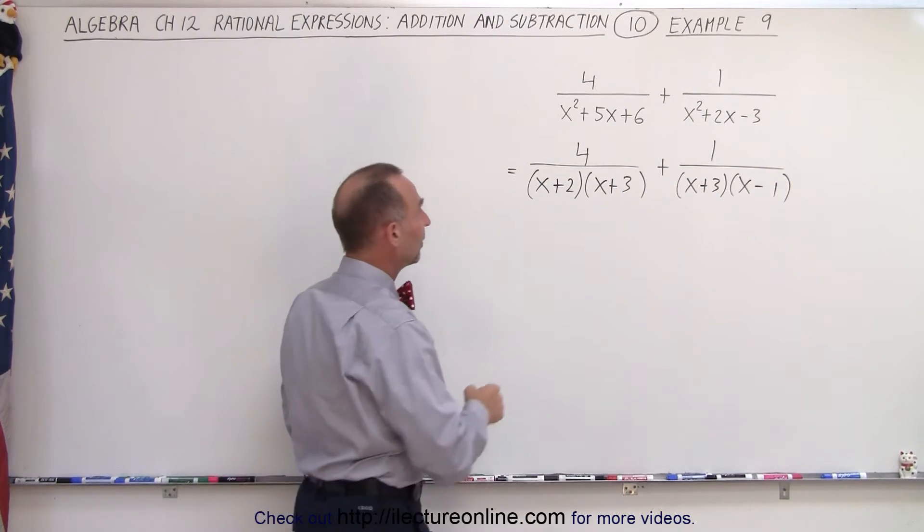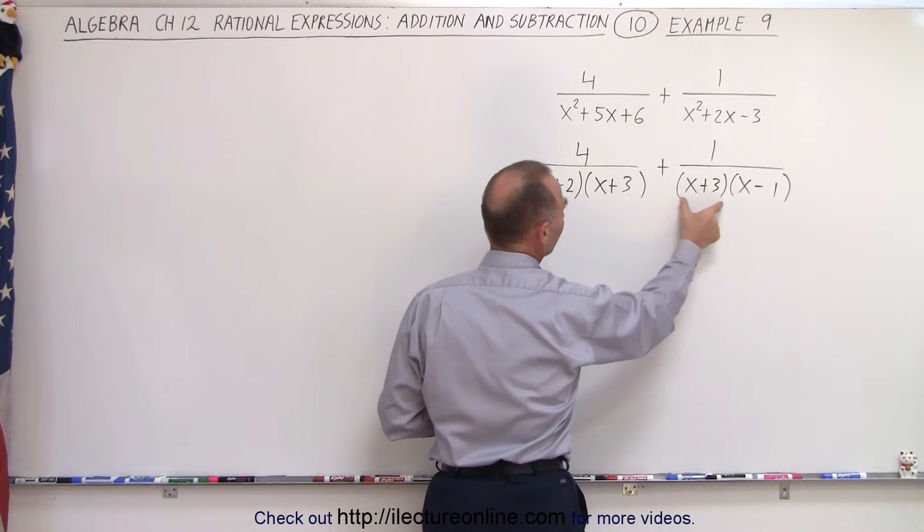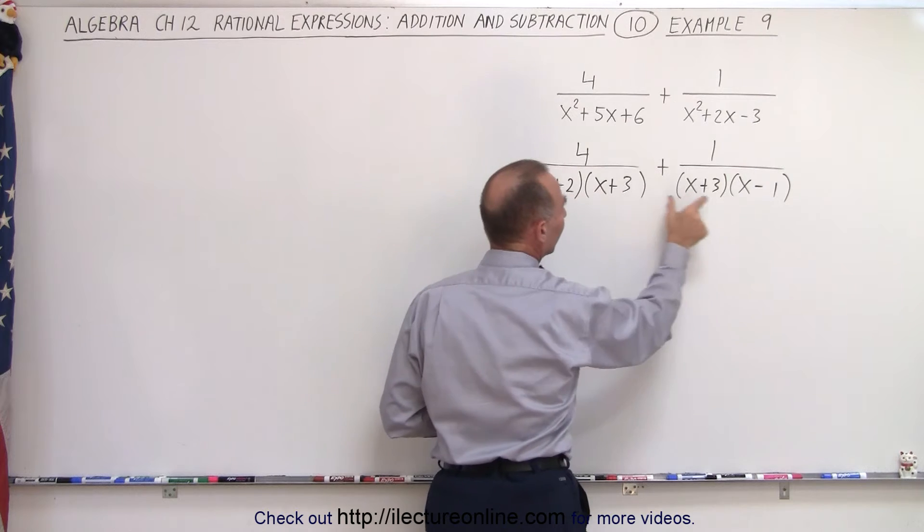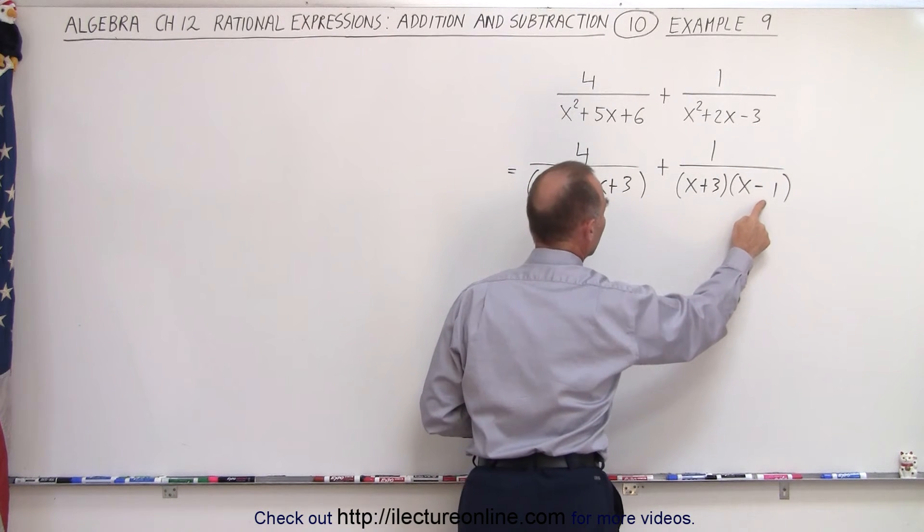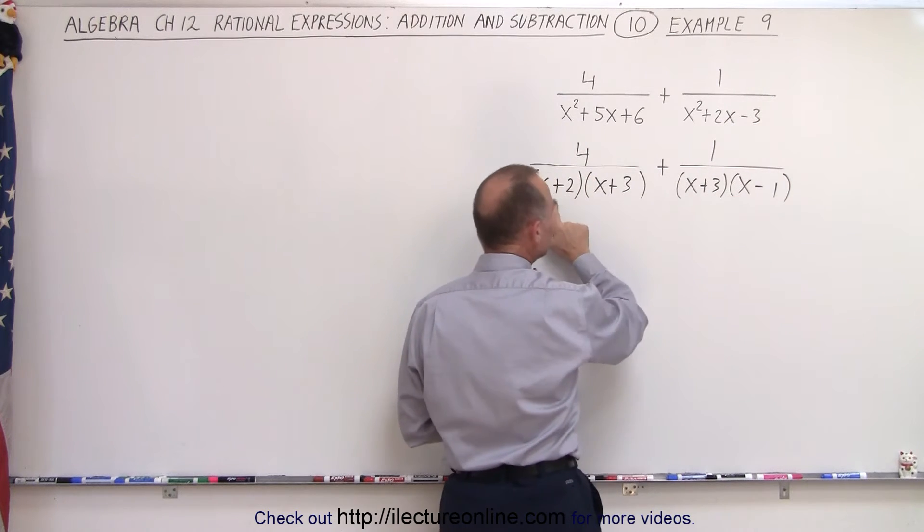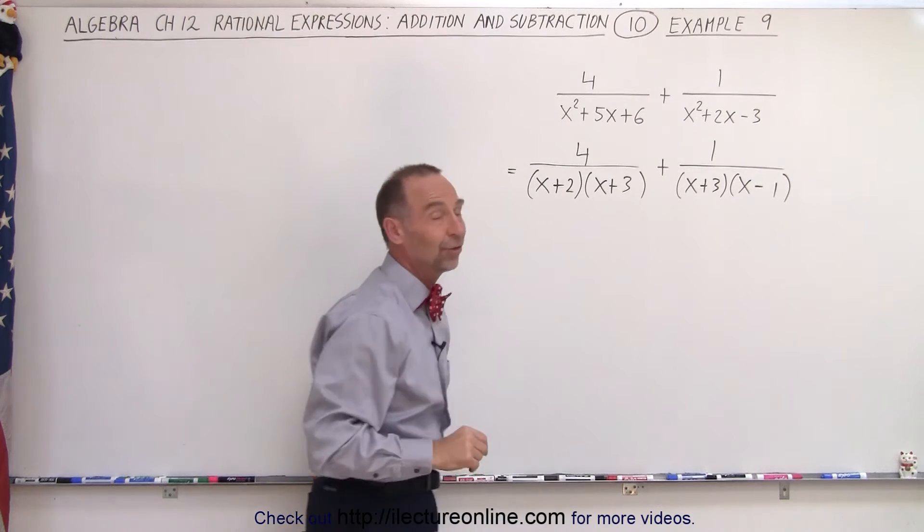Notice on the left side and on the right side that the binomial x plus 3 is common, but the other two are not common, which means that this one is missing the x minus 1, and this one is missing the x plus 2.